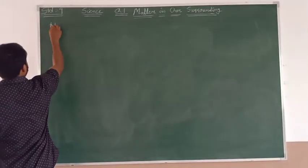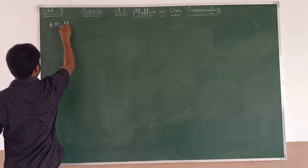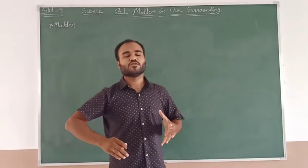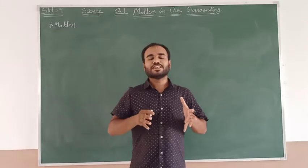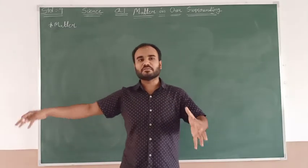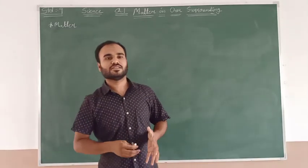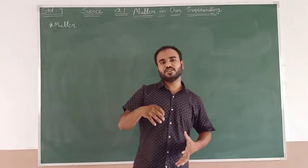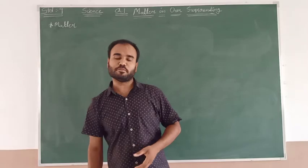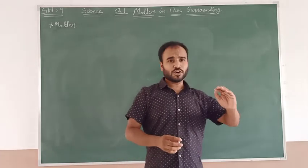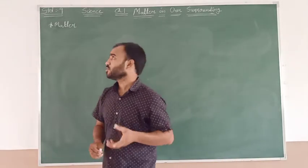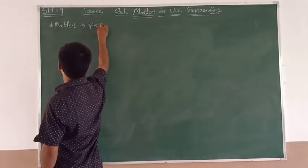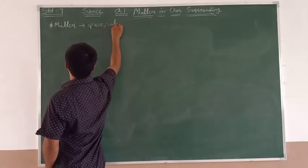Matter is the thing from which everything nearby us or that surrounds us is made. All the things in the universe are made up of matter. The characteristics of matter are that matter can occupy space and have volume.